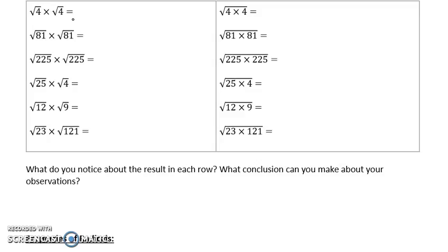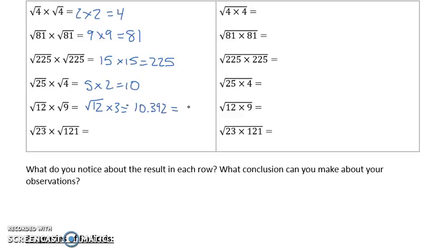I hope it was relatively straightforward for you. Root 4 times root 4 is just 2 times 2, which is 4. Root 81 times root 81 was 9 times 9, which is equal to 81. Root 225 times root 225 was 15 times 15, which was 225. Root 25 times 4 was 5 times 2, which was 10. And then things got a little more difficult. You probably weren't able to do the last two in your head. Root 12 is actually something that is a decimal. So, you might get something like root 12 times 3, which was approximately equal to 10.392. Or, you might have found it exactly equal to 6 root 3, depending on how you calculate the answer. Root 23 times root 121, times 11, would be exactly equal to 11 root 23, or approximately equal to 52.754.